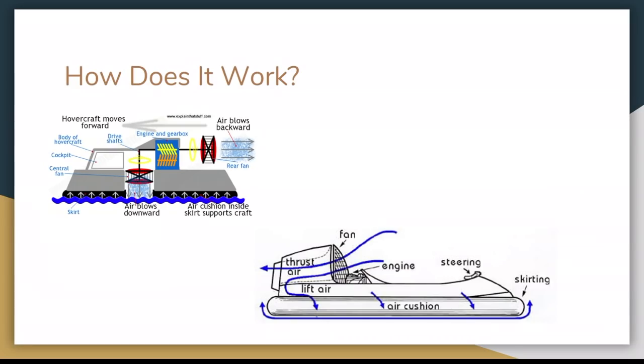So how does the hovercraft work? So I explained a bit in the last slide but if I choose a different color here. So this is the propeller you see right here that blows air downwards and this is the rear fan, well this would be the central fan and this would be the rear fan that blows air backwards pushing the hovercraft forwards because you're pushing air backwards and then the hovercraft goes forward. So you have a central fan and a rear fan that both work together to make the hovercraft move forward.